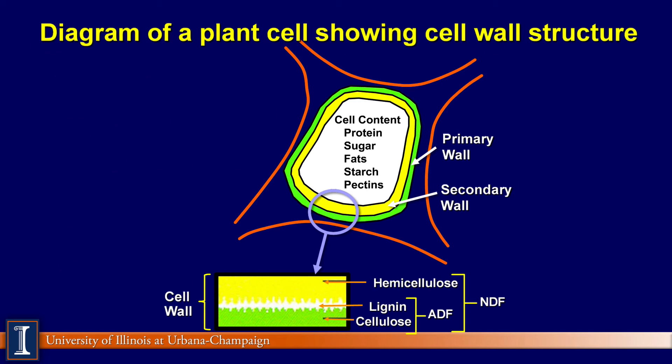A diagram is very useful to see these components. Think of it like an M&M: the cell contents — protein, sugar, fats, starches, and pectins — are the milk chocolate inside, very highly digestible. That is surrounded by the cell wall, which protects the cell, gives it rigidity, and increases as the plant matures. The cell wall is made up of cellulose (the green area), lignin which is like the cement, and hemicellulose, the more digestible fraction. As the plant matures, these cell walls get thicker and lignin content gets higher — and when lignin surrounds your cell contents, it walls off the highly digestible components such as sugars, starches, and proteins.